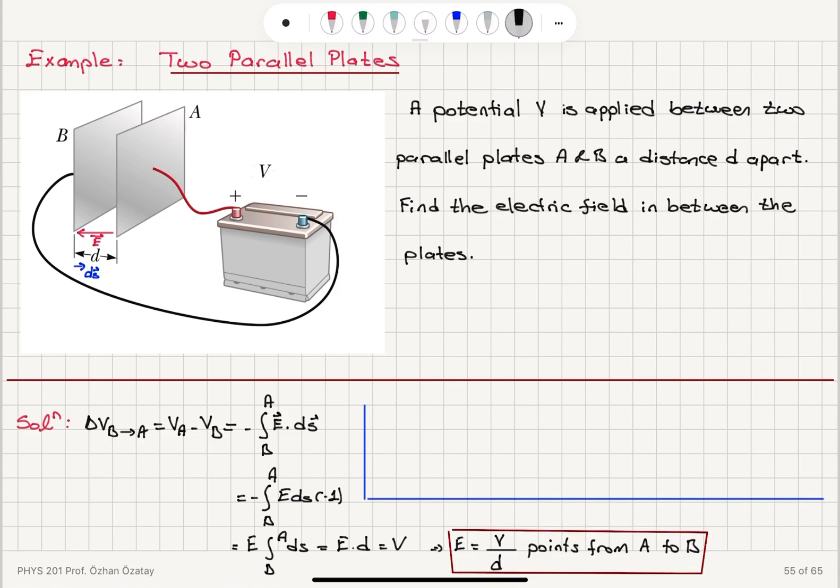And why did I say that the electric field is uniform between the plates? Because we have worked on this problem before in the discussion of Gauss law. We found that the electric field in between two plates of charges is equal to the charge density sigma divided by epsilon zero,